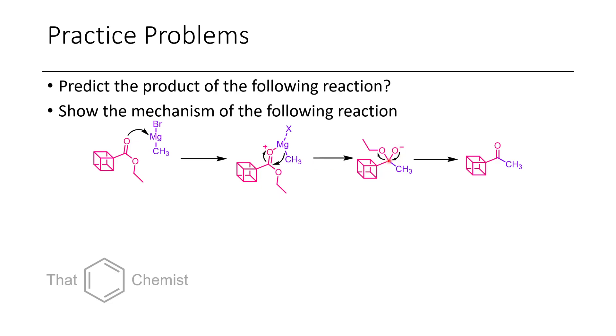The electrons are able to collapse back down, eliminating ethoxide as a leaving group, which forms this intermediate ketone. Now, if you recall, ketones are more electrophilic than esters. So what's going to happen?